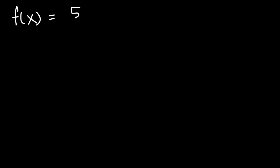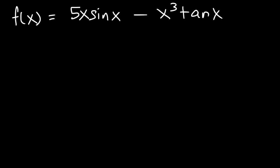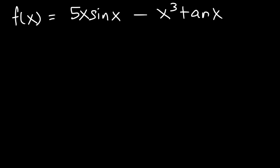Now let's move on to the next example. Let's say f of x is 5x sine x minus x cubed tangent x. Go ahead and find the first derivative of this function. We need to use the product rule on each term separately. For 5x sine x, we can say 5x is like f and sine x can represent g. For the second term, x cubed can be f and g could be tangent x.